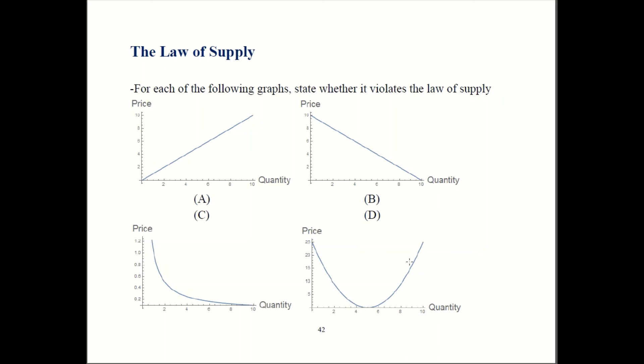So in graph D, for this part, price goes up and quantity goes up, so that's okay. But over here, when price goes up, quantity goes down, that can't be right. So to follow the law of supply, it's got to follow the law of supply for the entire graph, not just part of it. So overall, we say graph D violates the law of supply.